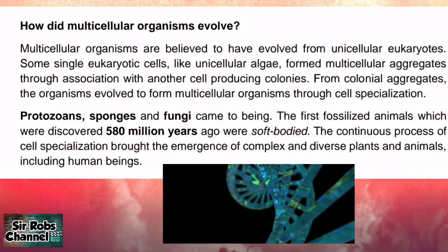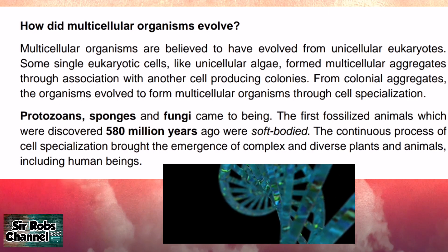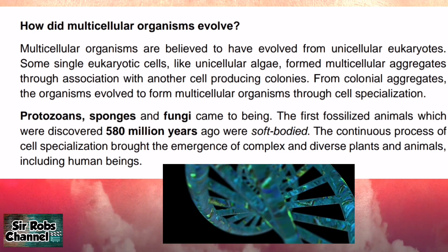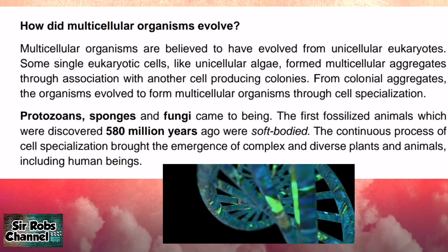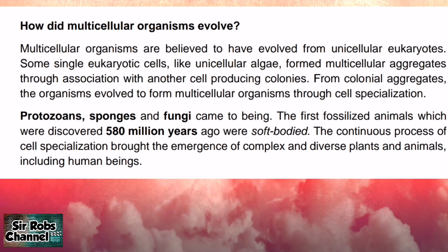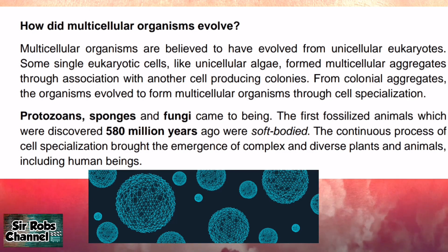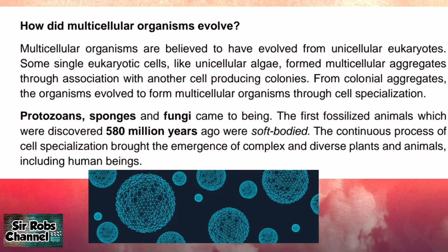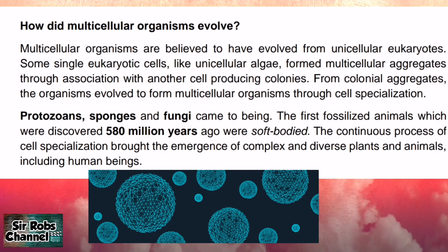The first fossilized animals, discovered from about 580 million years ago, were soft-bodied. The continuous process of cell specialization brought about the emergence of complex and diverse plants and animals, including human beings. Take note: multicellular organisms, from fungi to humans, started out life as single-cell organisms. These cells were able to survive on their own for a billion years before aggregating together to form a multicellular group.